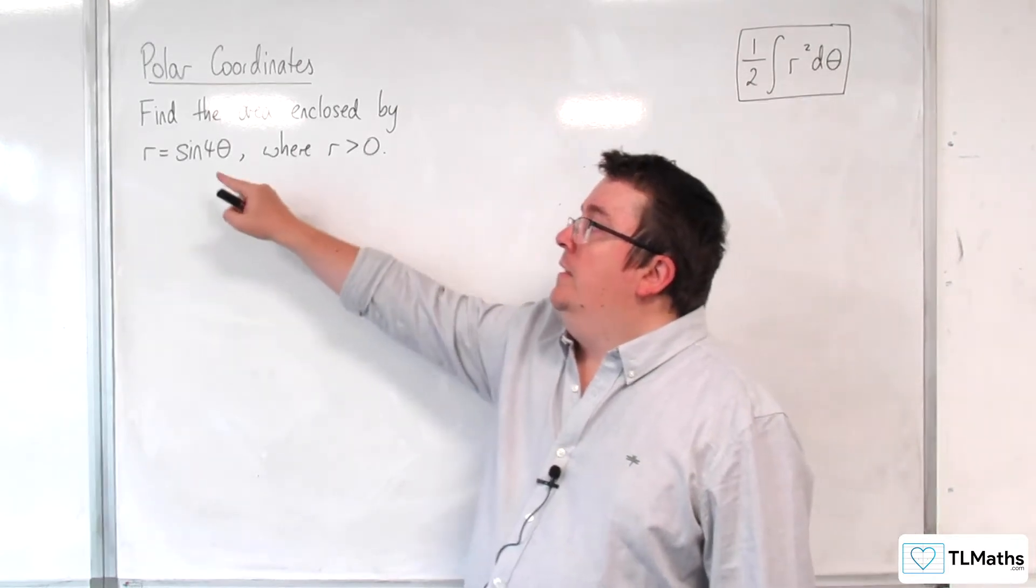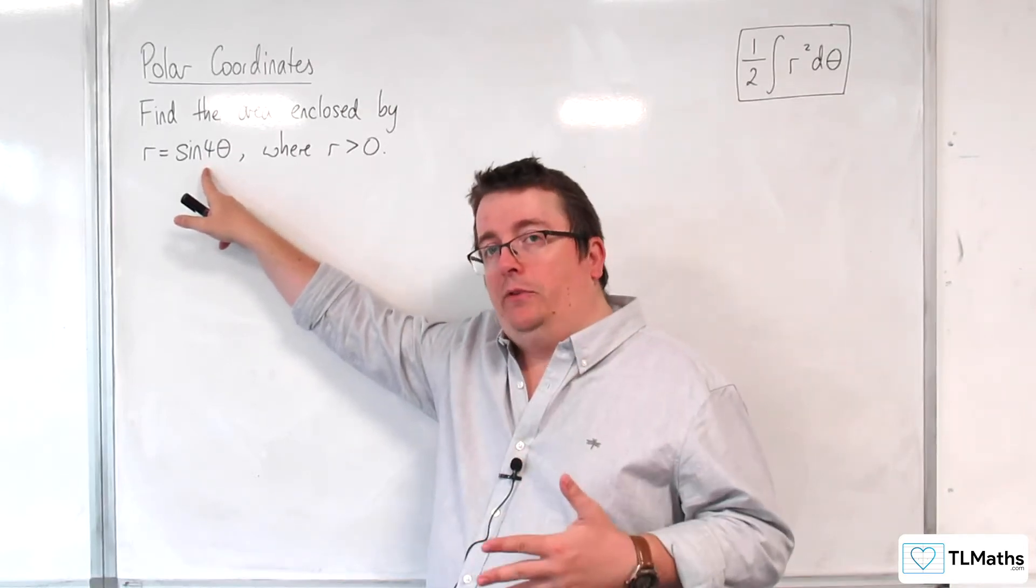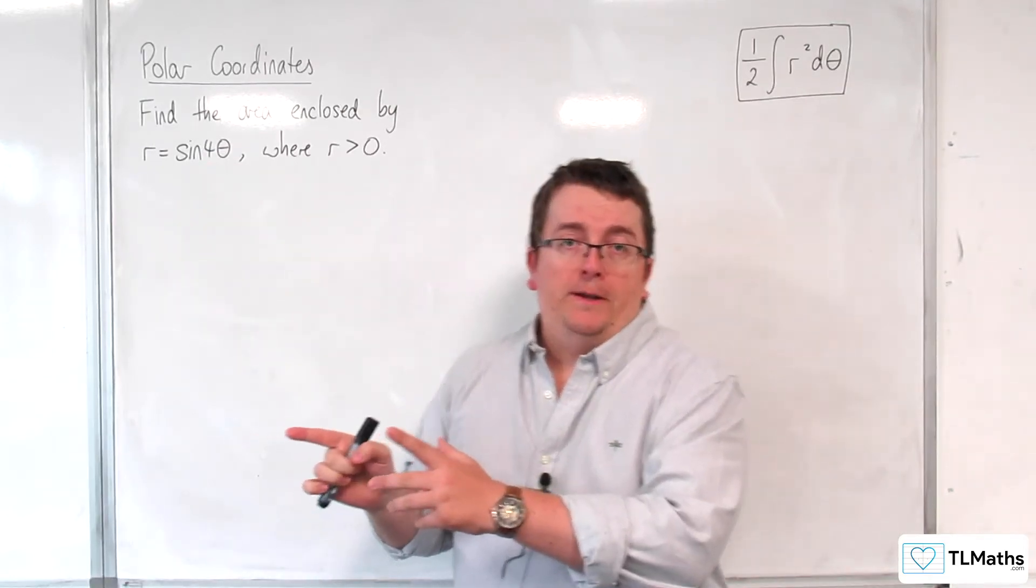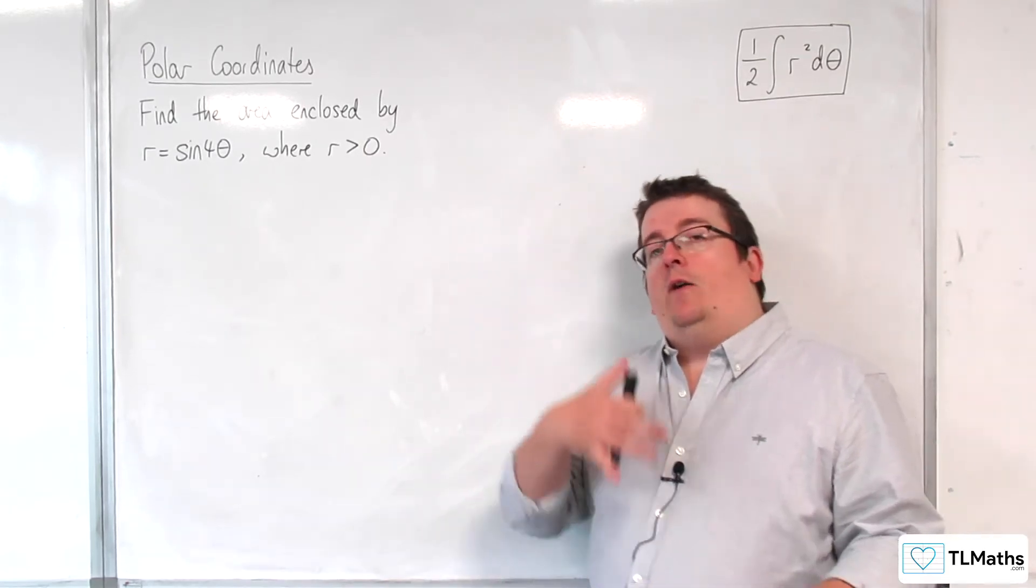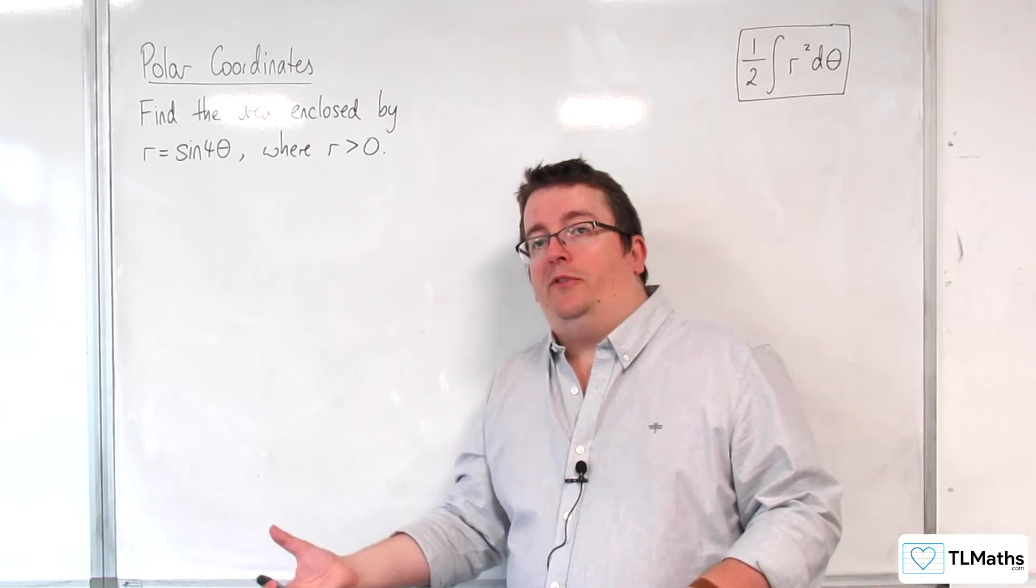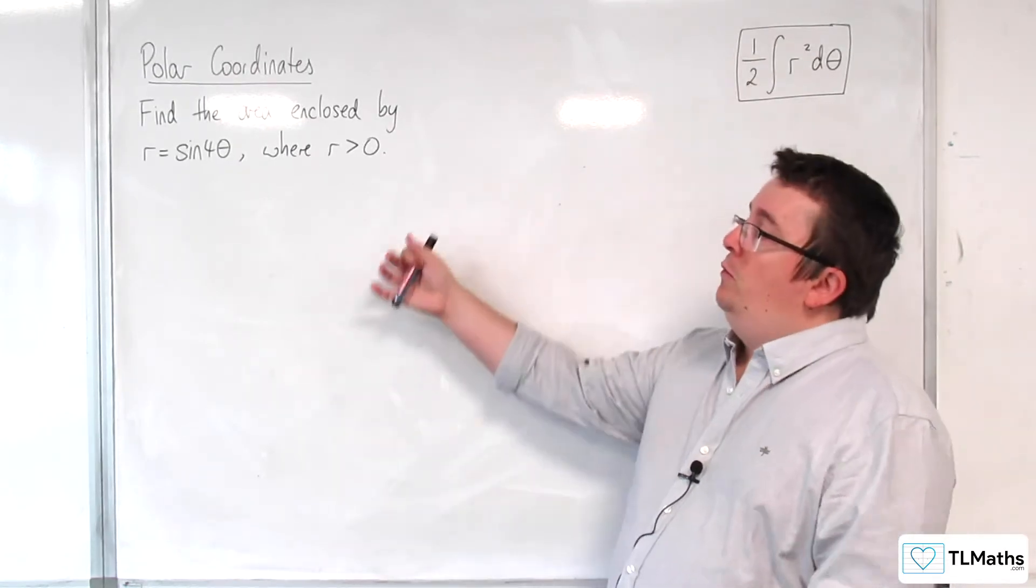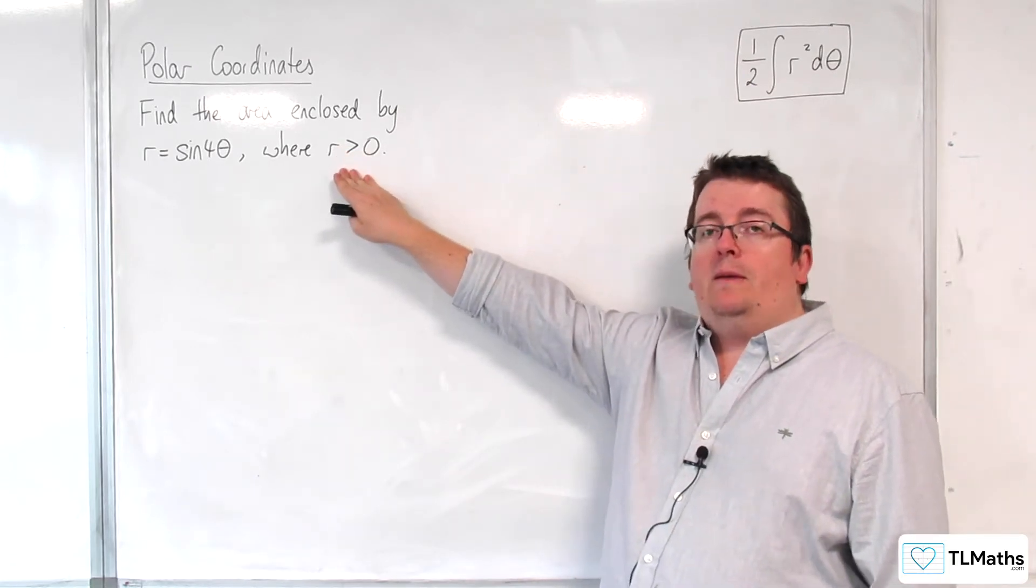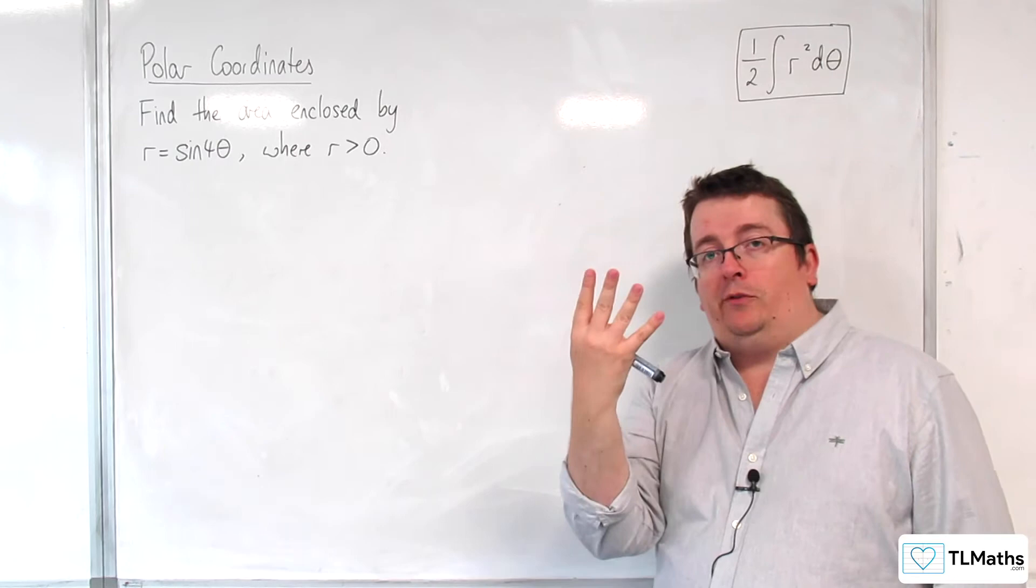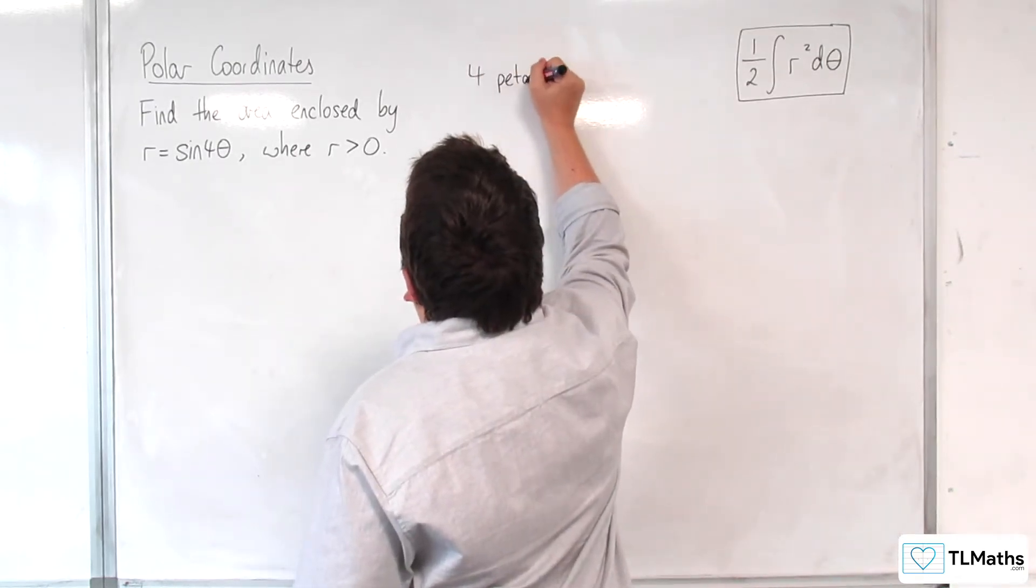So, actually, this one is also a rose curve and will have 8 petals. Now, that's including values when r is positive and when r is negative. Half of those will be when r is positive, half will be when r is negative. So when we are focusing on r is greater than 0 here, that means there are only 4 petals that we need to consider.